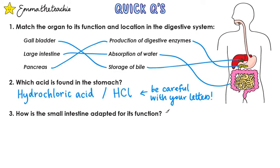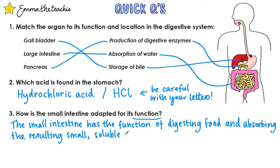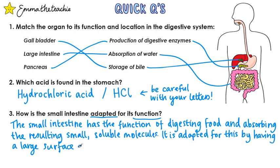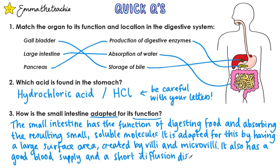Question three: how is the small intestine adapted for its function? The small intestine has the function of digesting food and absorbing the resulting small soluble food molecules. It's adapted for this by having a large surface area created by villi and microvilli. It also has a good blood supply and a short diffusion distance to the blood vessels.